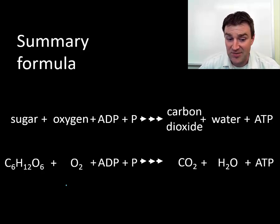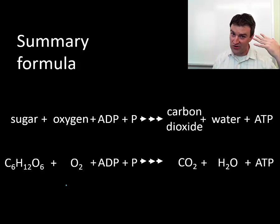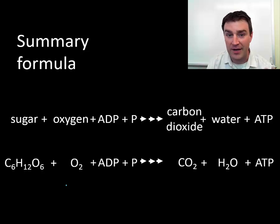You have a digestive system in order to get nutrients like sugar. You have a breathing system in order to get oxygen. And you have a circulatory system to constantly deliver that sugar and oxygen to every single one of your body cells so that you have the sugar and the oxygen that you need to make your ATP.